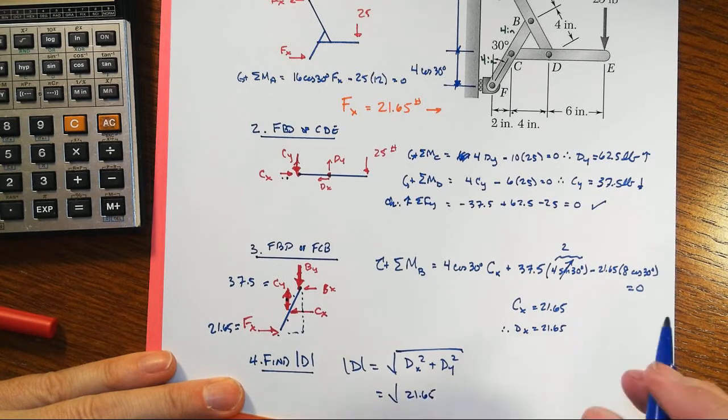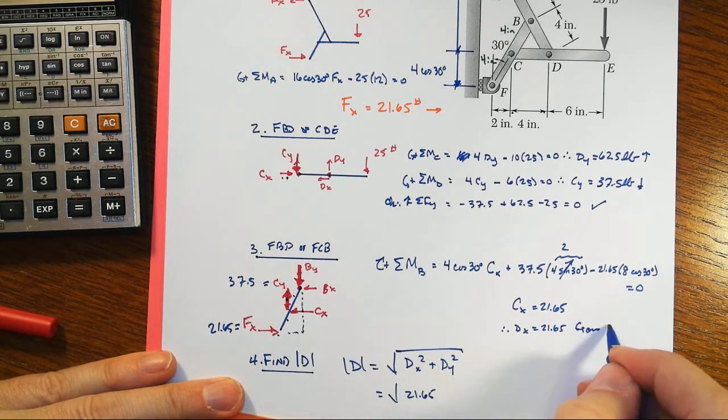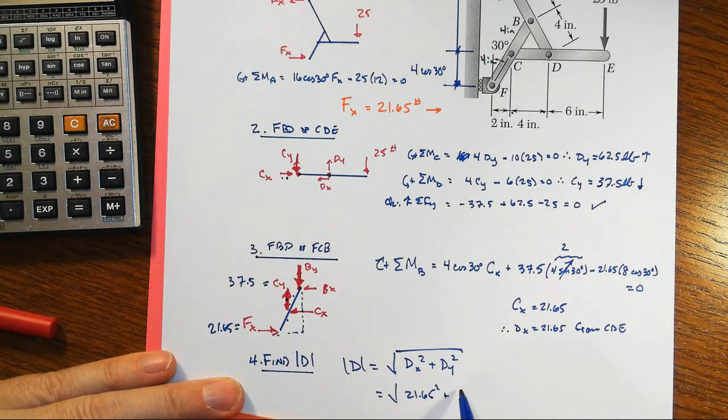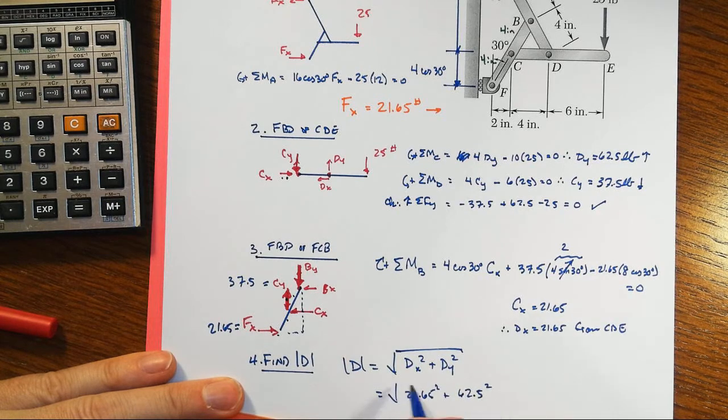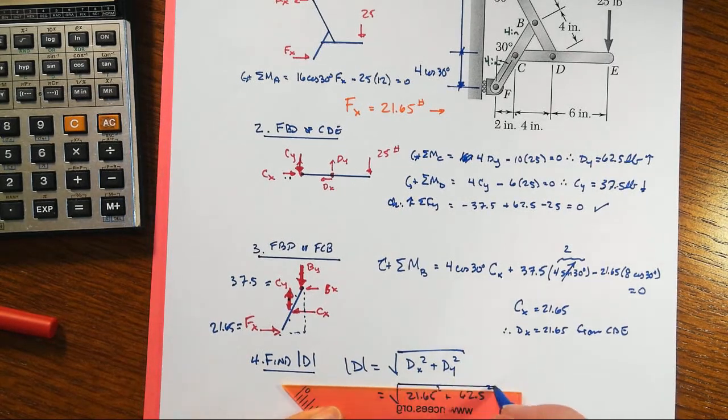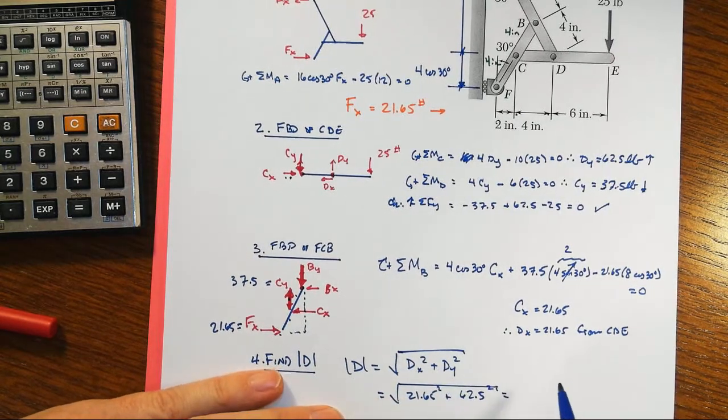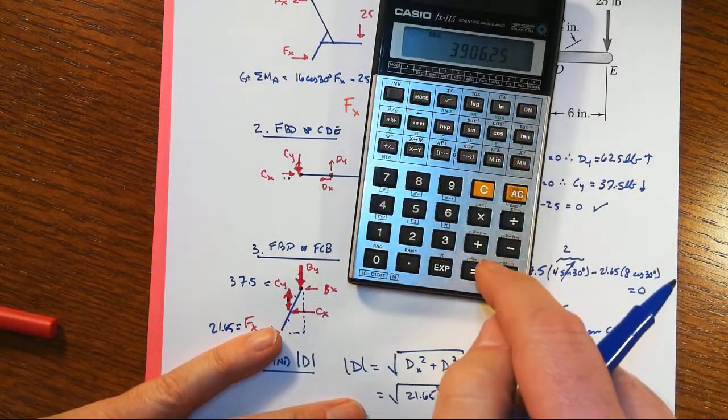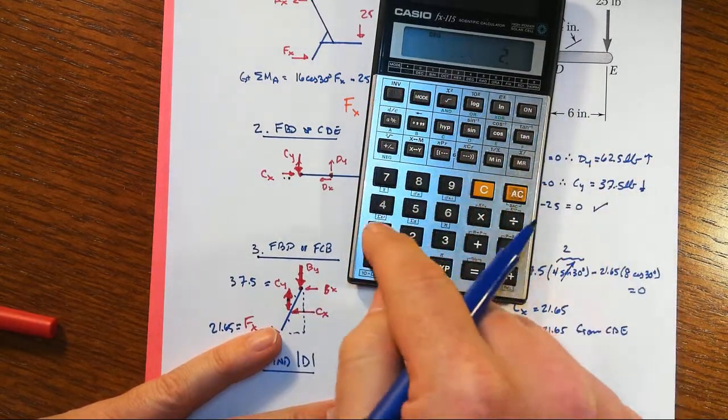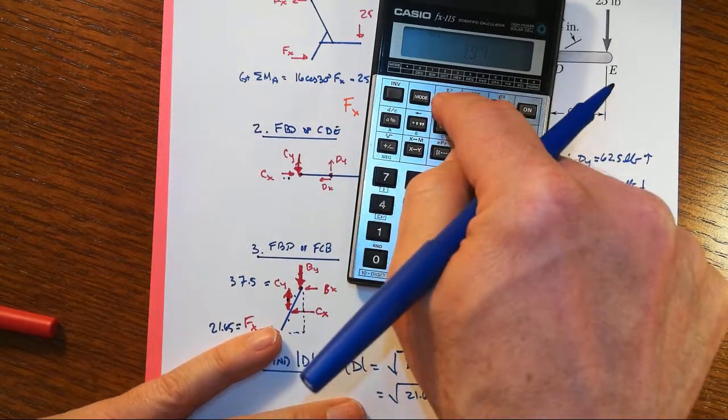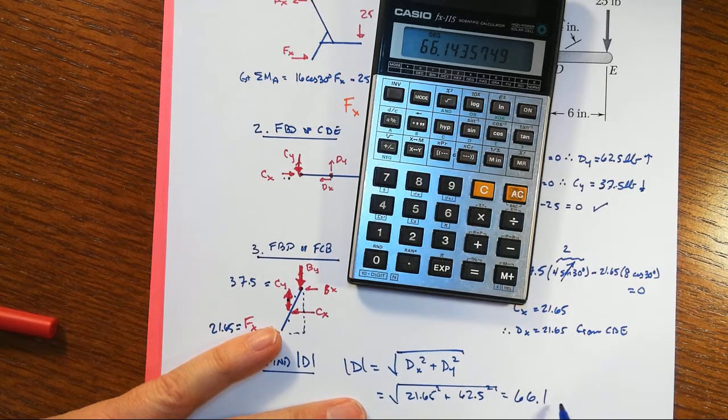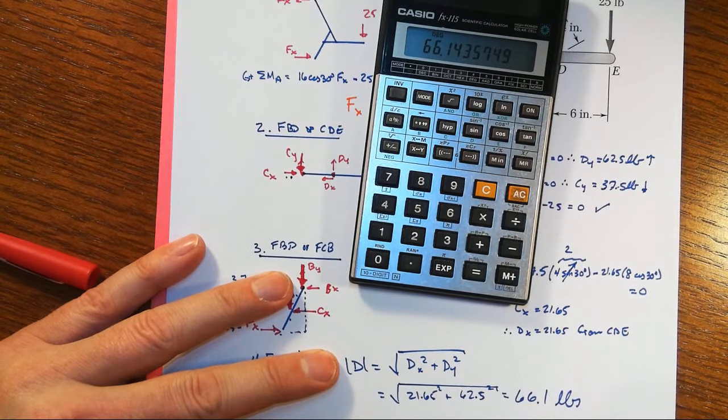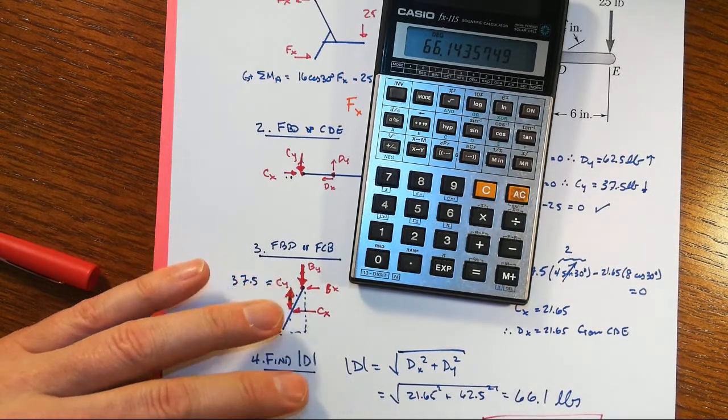Square root of 21.65 squared plus then the 62.5, and that will be—let's see here—62.5 squared plus 21.65 squared, square root: 66.1 pounds. And there you go.